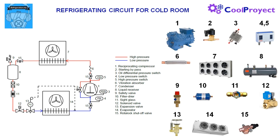In number 12 we have the solenoid valve. It is used to shut off liquid feed to the evaporator when the thermostat orders. The compressor will continue suctioning and gathering vapor from the evaporator, and finally the compressor will stop by the order of the low pressure switch. To empty the evaporator is a good thing for the defrost operation.